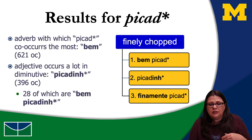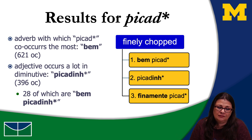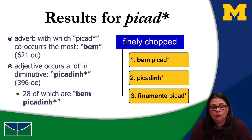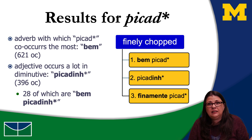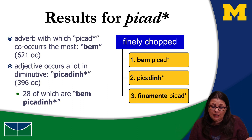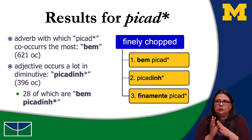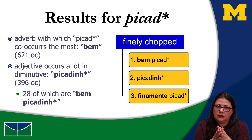So 'well chopped,' 'well finely chopped' — and also the diminutive 'picadinho,' with 396 occurrences. We can conclude that in cooking recipes, 'finely' does not translate as 'finamente,' but translates as 'bem picado' or 'picadinho.' This shows how we can use the corpus to find equivalents that are more adequate to our particular kinds of texts.